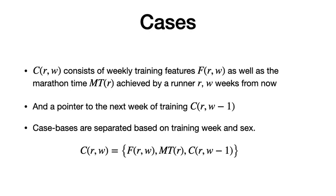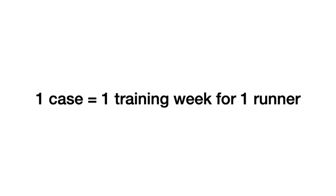With these weekly training features, we construct cases. Each case consists of the weekly training features for week W, along with the marathon time achieved by the runner W weeks from now. We also include a pointer to the next week of training. Case bases are separated by training week and sex, since physiological differences between males and females lead to different training and race outcomes. One case equals one training week for one runner.